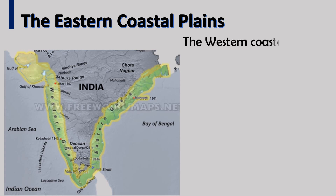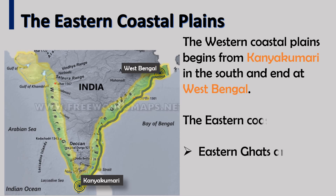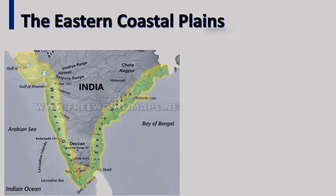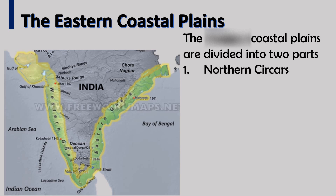The eastern coastal plains begin from Kanyakumari in the south and end at West Bengal. The eastern coast lies between the Eastern Ghats and the Bay of Bengal. The eastern coastal plains are divided into two parts: first, Northern Circars, and second, Coromandel Coast.